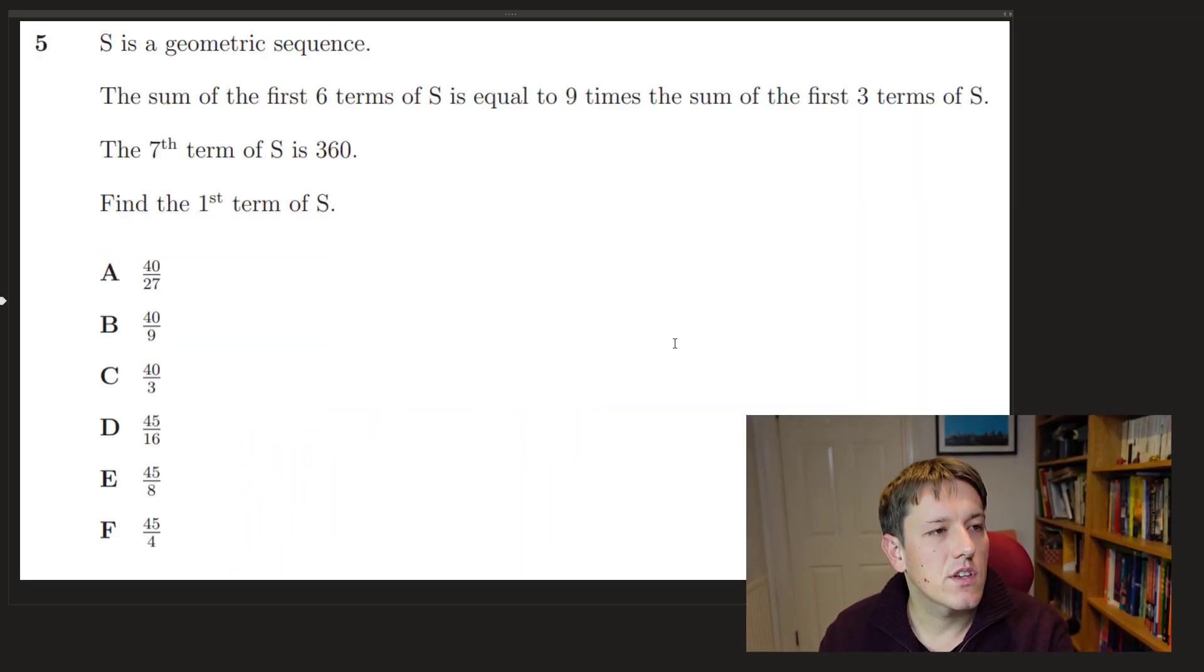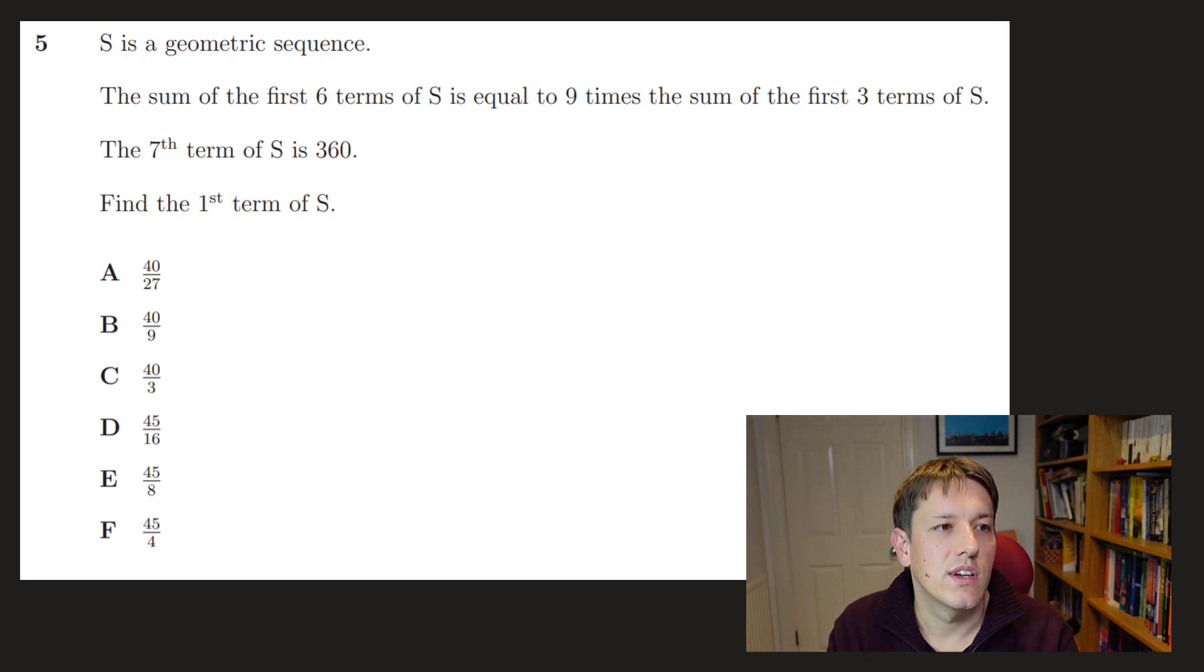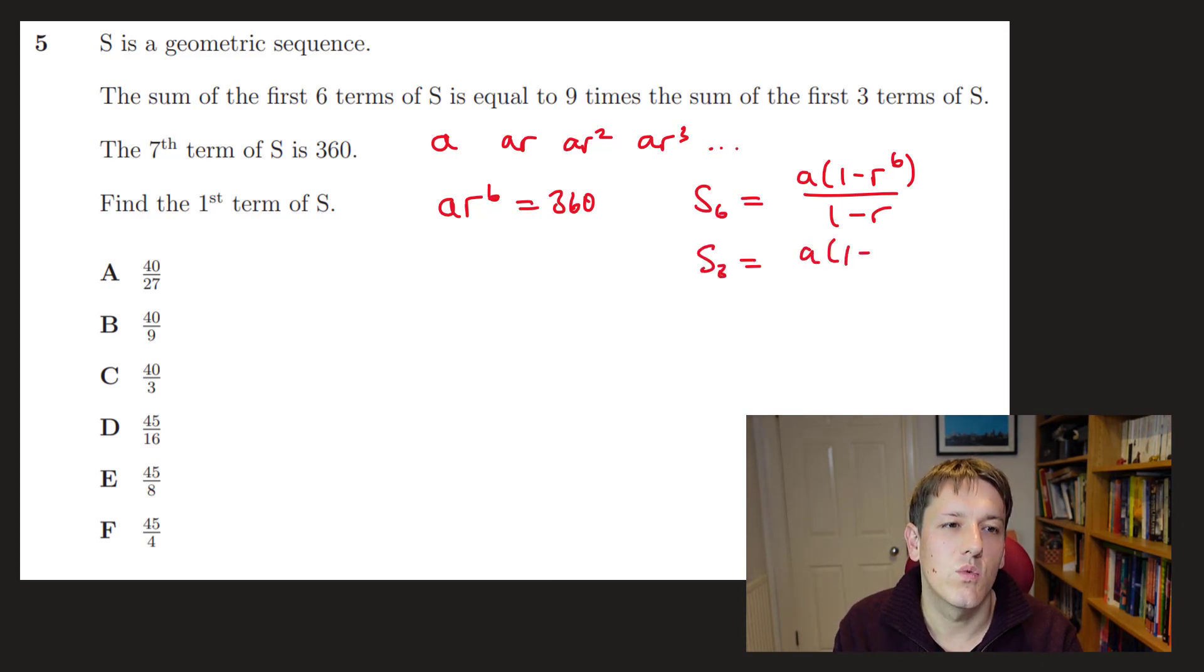So in question 5, it says we've got a geometric sequence. The sum of the first six terms is equal to 9 times the sum of the first three terms, and the seventh term is 360. So I'm just going to try and write this all down in the sequences notation. Our geometric progression is going to go a, ar, ar², ar³, etc. So the seventh term being 360 says that ar⁶ = 360. And the formula for the sum of the first six terms, s₆, that's a(1-r⁶)/(1-r). And for the third term, s₃, that's a(1-r³)/(1-r) for the sum of the first three terms. And we know that s₆ is 9 times s₃.